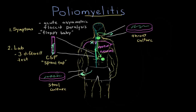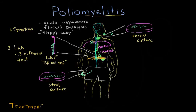Once diagnosis is made, we need to progress to treatment. Unfortunately, there is really no treatment for a person who has polio — it's really symptomatic support. If a patient, for example, has their respiratory muscles, like the diaphragm, become dysfunctional and they can't breathe, then they might need support through a breathing tube placed into the mouth to support the lungs.